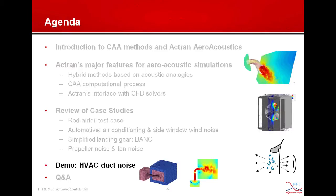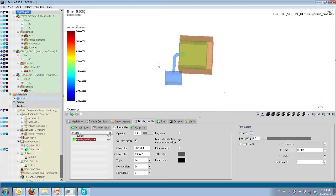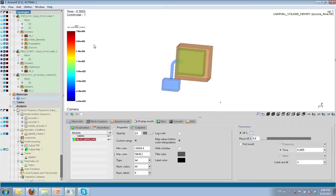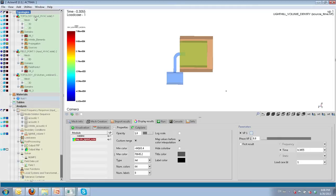Now we move to the demo session. I will show the main steps for modeling HVAC duct aero-acoustic noise. I will share my desktop and go to Actran VI, the graphical user interface of Actran. I will not build this model from scratch — I already prepared it and imported an already set-up analysis in Actran VI.